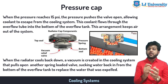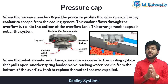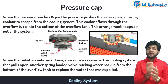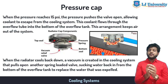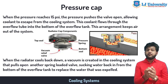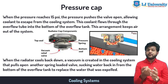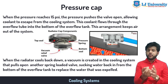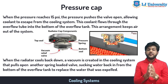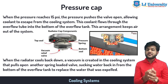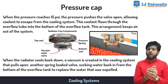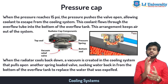The boiling point of water increases when placed under pressure. When the fluid in the cooling system heats up, it expands, causing pressure to build up. The cap is the only place where this pressure can escape, and the spring setting defines the pressure in the cooling system. When the pressure reaches 15 psi, the valve opens and coolant escapes through an overflow tube into the bottom of the overflow tank, keeping air out. When the radiator cools down, a vacuum pulls the coolant back from the overflow tank.